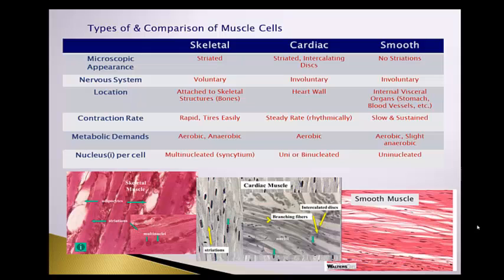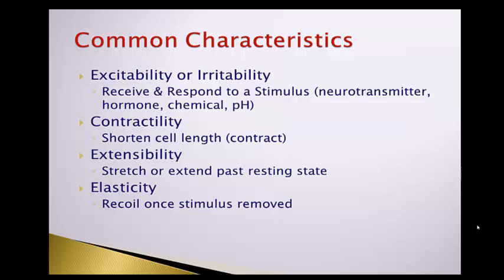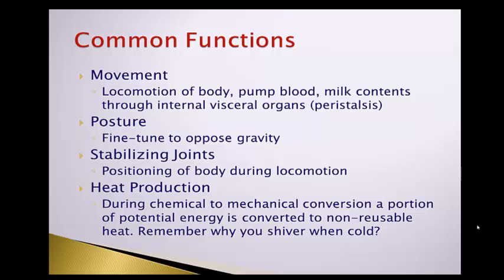All muscle cells share common characteristics. They are excitable — able to receive and respond to a stimulus, most frequently an electrical stimulus through neurotransmitters, but also hormones, chemicals, or pH changes. They have contractility, meaning when appropriately stimulated they shorten in length. They are also extensible — they can stretch a little past resting state, preventing excessive tearing during exercise. And they are elastic — once the stimulus ceases, the muscle returns to its resting state, like a rubber band.